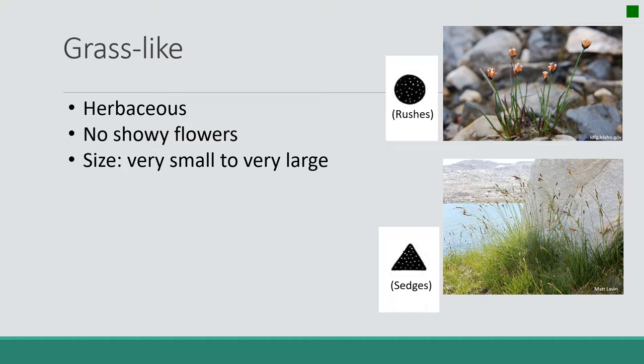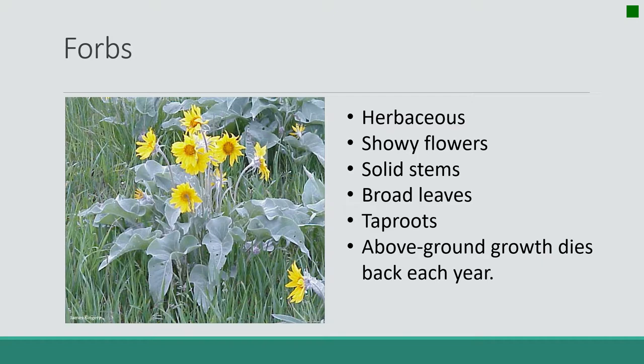Our grasslikes have parallel veins and a fibrous root system like our grasses. Moving on to forbs — our forbs have showy flowers, solid stems, broad leaves, and taproot systems. A taproot system is where one large root grows deep into the ground and then secondary roots grow off of it. The broad leaves differentiate them from our grasses and our grasslikes. We'll begin to see a lot of the netted venation in our forbs and our shrubs, and their stems are also solid.